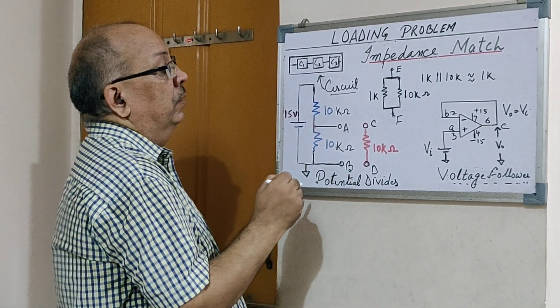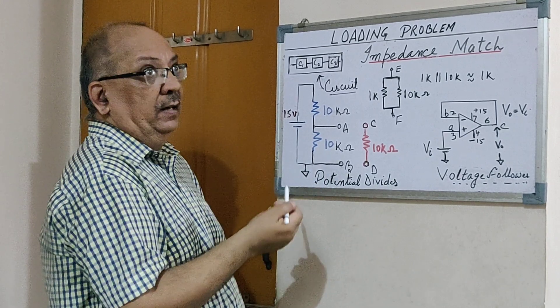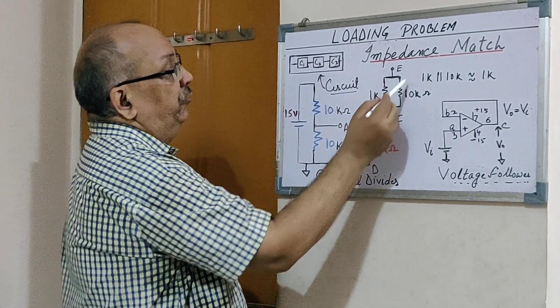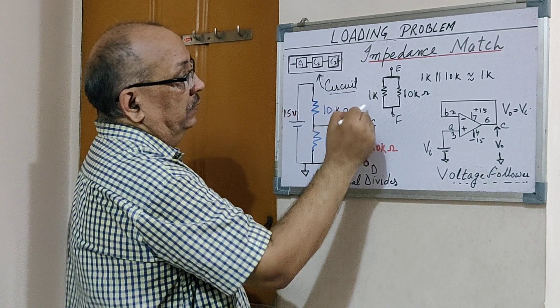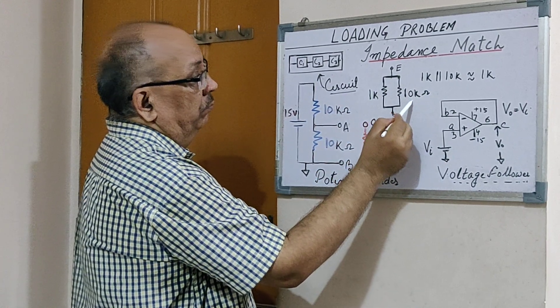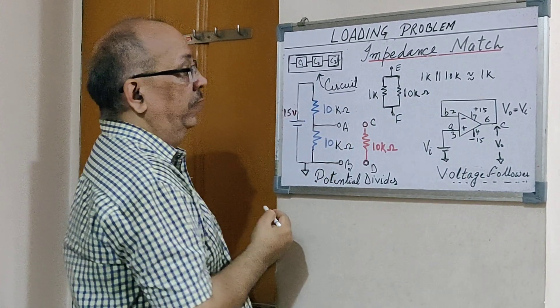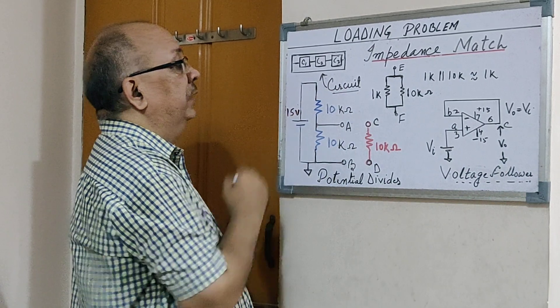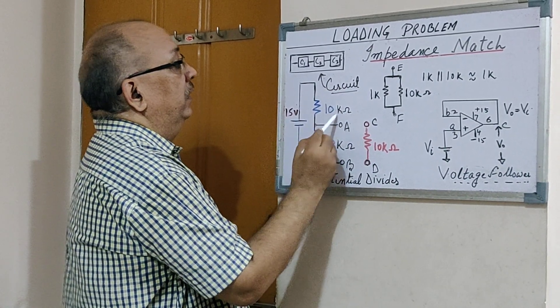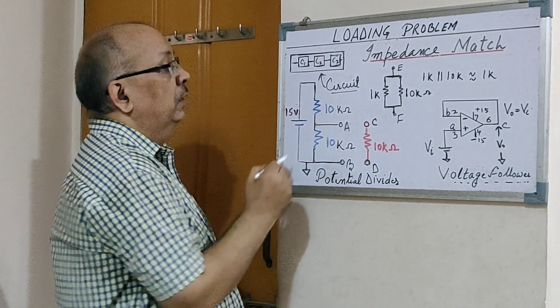If I apply the same concept here, rather than taking 10 kilo-ohms and 10 kilo-ohms, if I just take 1 kilo-ohm and 1 kilo-ohm, my voltage remains 7.5 volts. And now if I connect